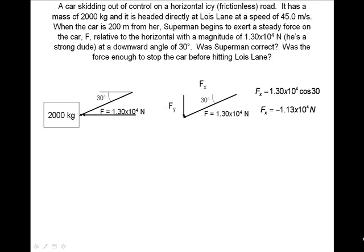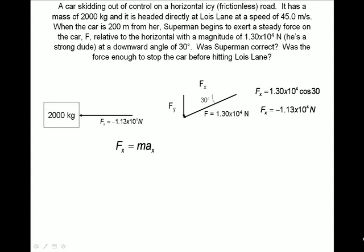By drawing a free body diagram, we can see how the x component will be stopping the motion of the object. We will use Newton's second law formula to find the acceleration. We rearrange the values to isolate ax, input our values, and find the acceleration to be negative 5.63 meters per second squared.